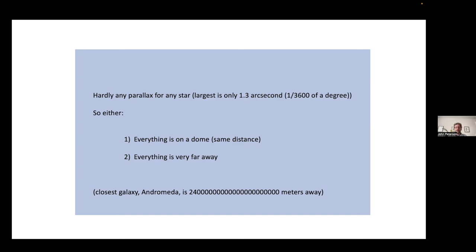Ancient astronomers picked the first explanation: there's hardly any parallax, so one way to get that is to put everything at the same distance — everything is on a dome. That's the clever reason they put everything on a dome at the same distance. But the second possibility — which turns out to be correct — is that everything is just very, very far away. In fact, the closest galaxy to us, Andromeda, is 2.4 × 10^22 meters away. Ancient people probably didn't even have words to express a number that big. The fact that stars move in constellations tells us that everything is very far away, and the universe must be pretty big — far bigger than people could even imagine at that point.